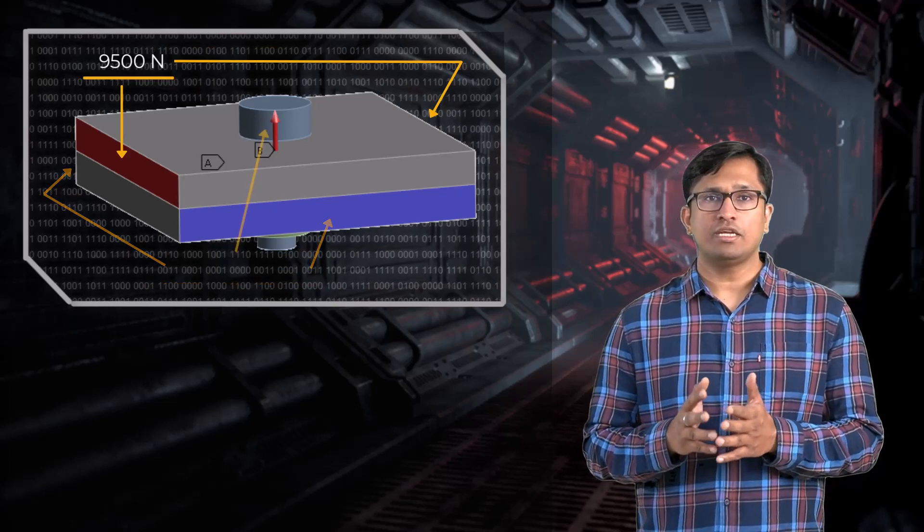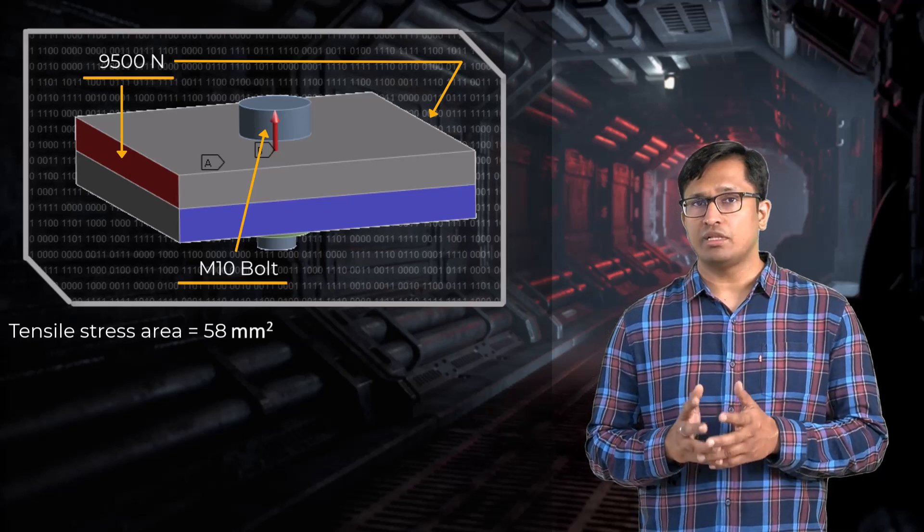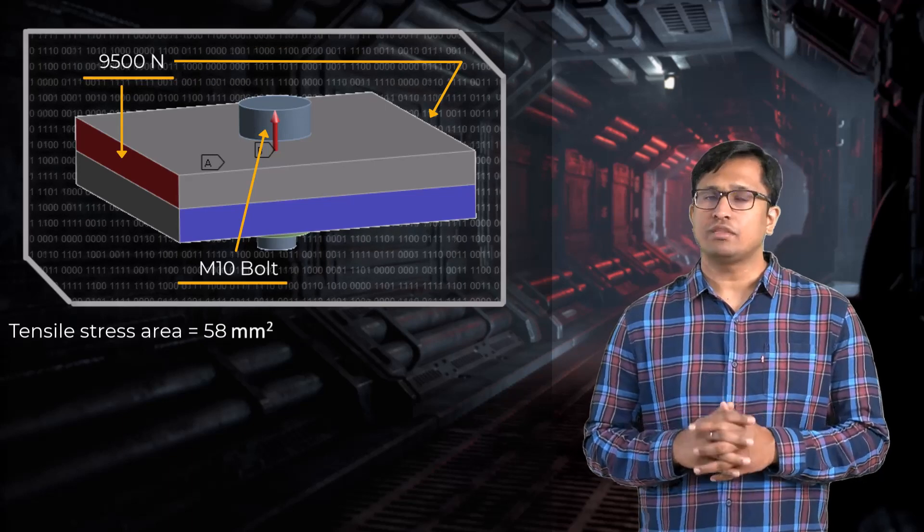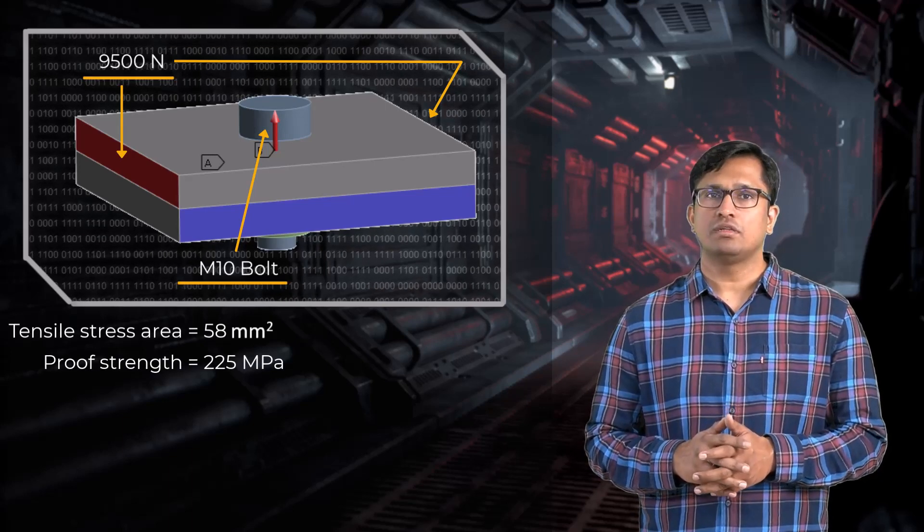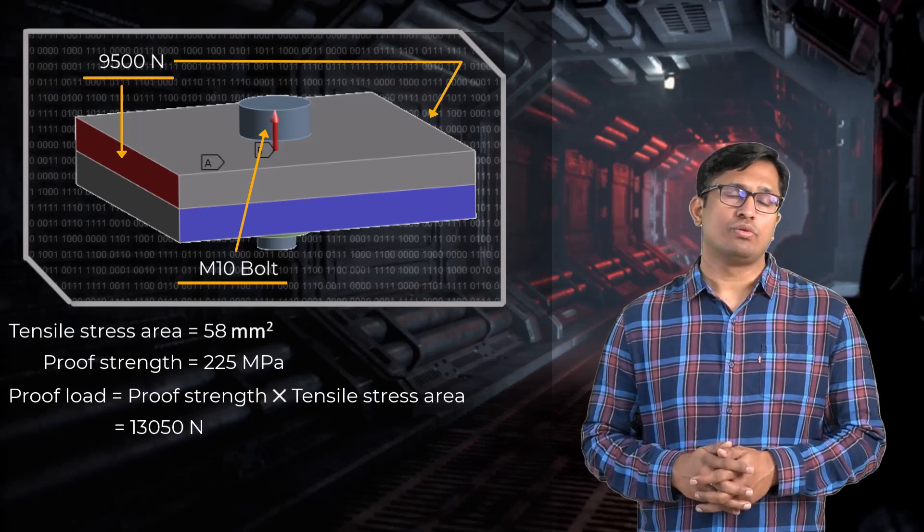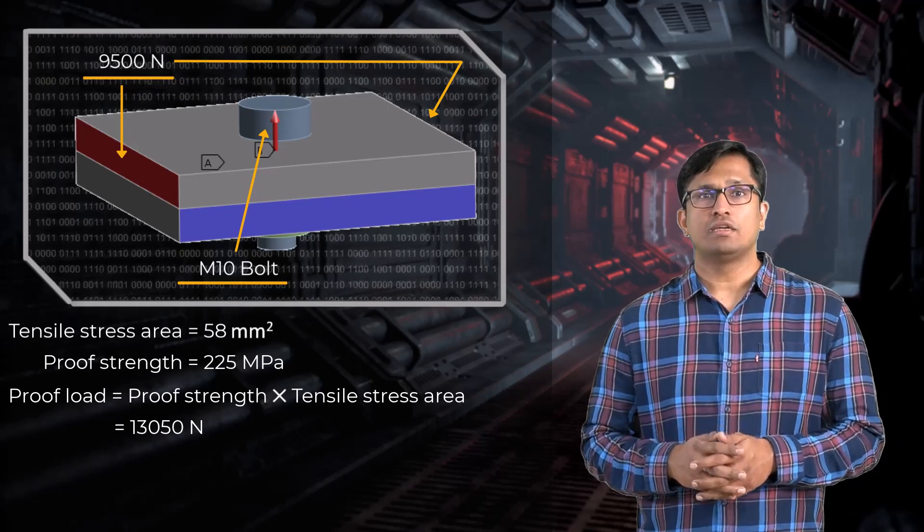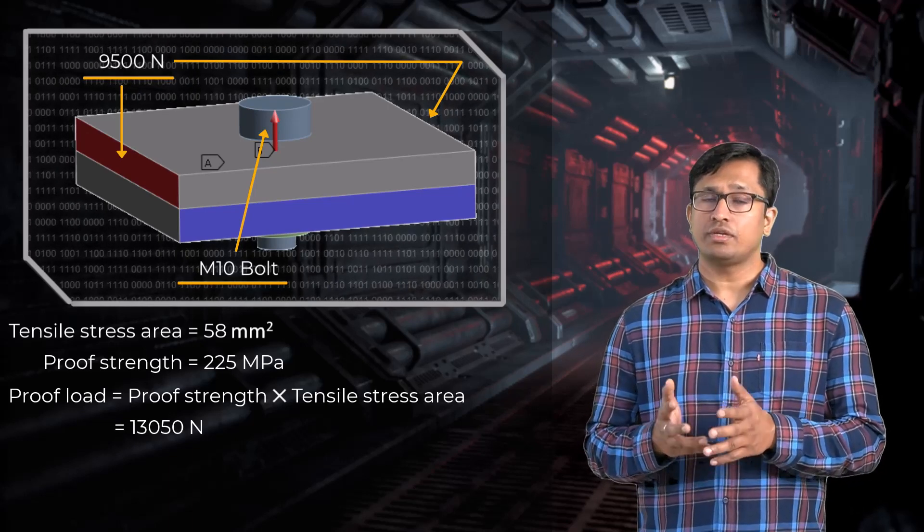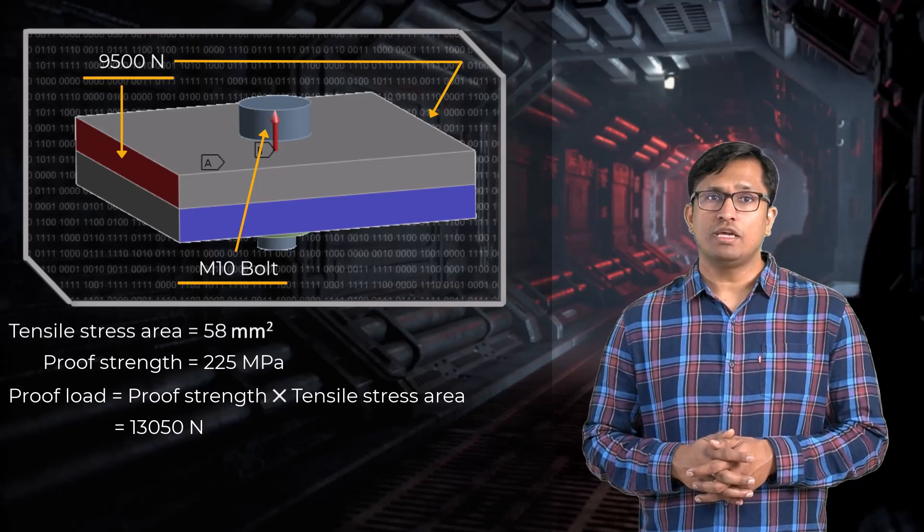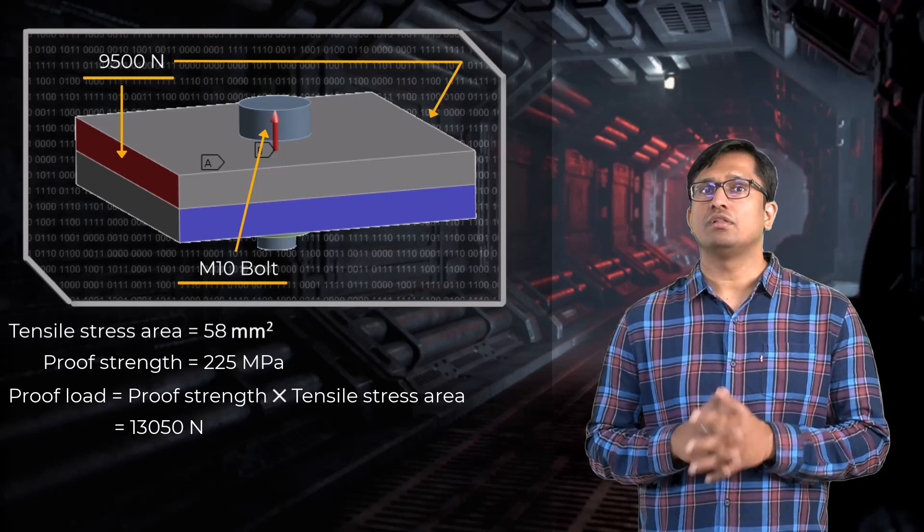We have chosen an M10 bolt with a tensile stress area of 58 mm² and a proof strength of 225 MPa, providing a 13050 N proof load capacity. In doing so, we have built-in safety factor if the joint does separate. The bolt we have chosen will be capable of withstanding the full external load.